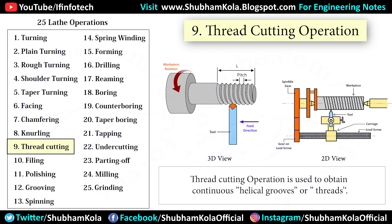Thread cutting operation is used to obtain continuous helical grooves or threads. When threads or helical grooves are formed on the outer surface of a workpiece, it is called external thread cutting. When formed on the inner surface, it is called internal thread cutting. The workpiece rotates between two centers — the live center and dead center. When the tool is moved from right to left, we get a left-hand thread, and when moved from left to right, we get a right-hand thread.